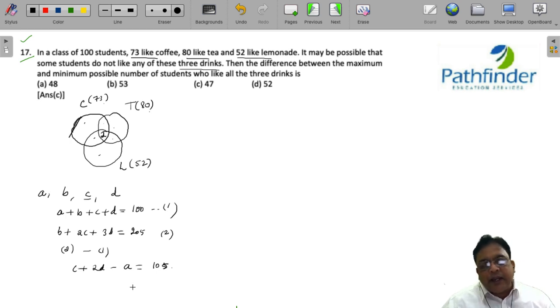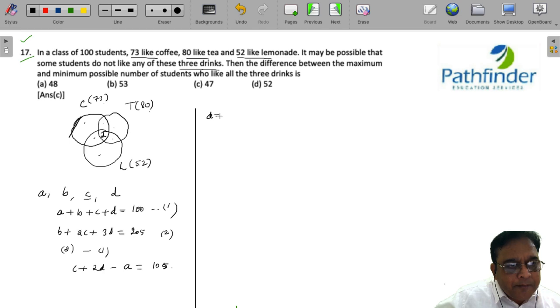Now, in this equation, what can be the maximum possible value of D? The maximum possible value of D can be 52. Let us see whether it is possible. D is equal to 52. Now, do not jump to a conclusion. You have to see whether this is possible also or not. Mostly it will be possible. C minus A must be equal to 1 from this third equation. So, if C minus A is 1, we also have A plus B plus C plus 52 as 100, which means A plus B plus C must be equal to 48.